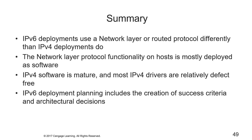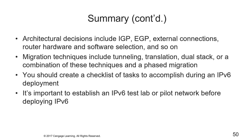In summary: IPv6 deployments use a network layer or routed protocol differently than v4 deployments do. Network layer protocol functionality on hosts is mostly deployed as software. IPv4 software is mature and most v4 drivers are relatively defect-free, but that's not true for v6. IPv6 deployment planning includes creating success criteria and architectural decisions, covering IGP, EGP, external connections, router hardware and software selection, and more. Migration techniques include tunneling, translation, dual stack, or combination phased approaches. You should create a checklist of tasks to accomplish during deployment, and it's important to establish a v6 test lab or pilot network before deploying IPv6.